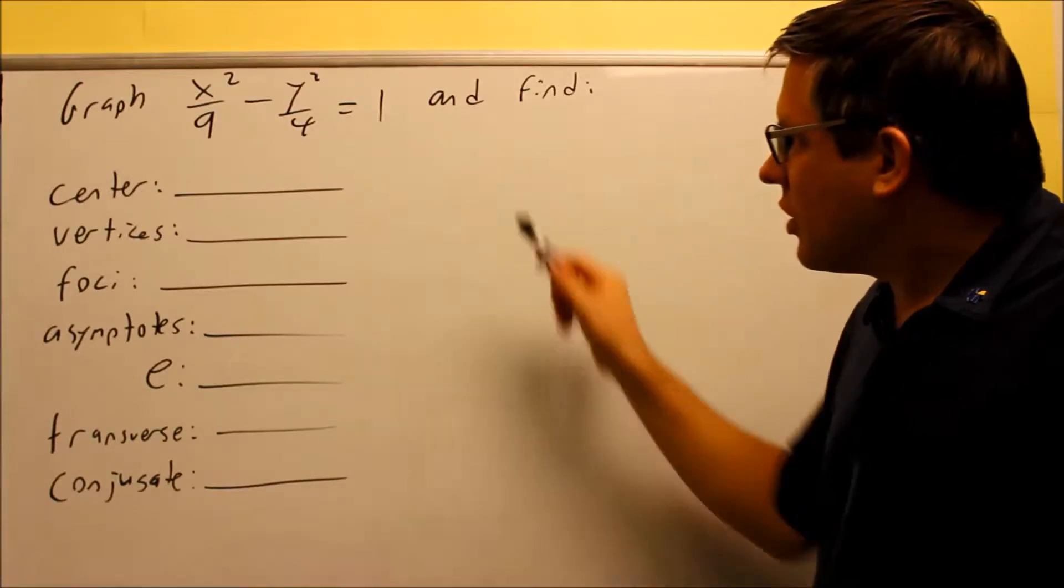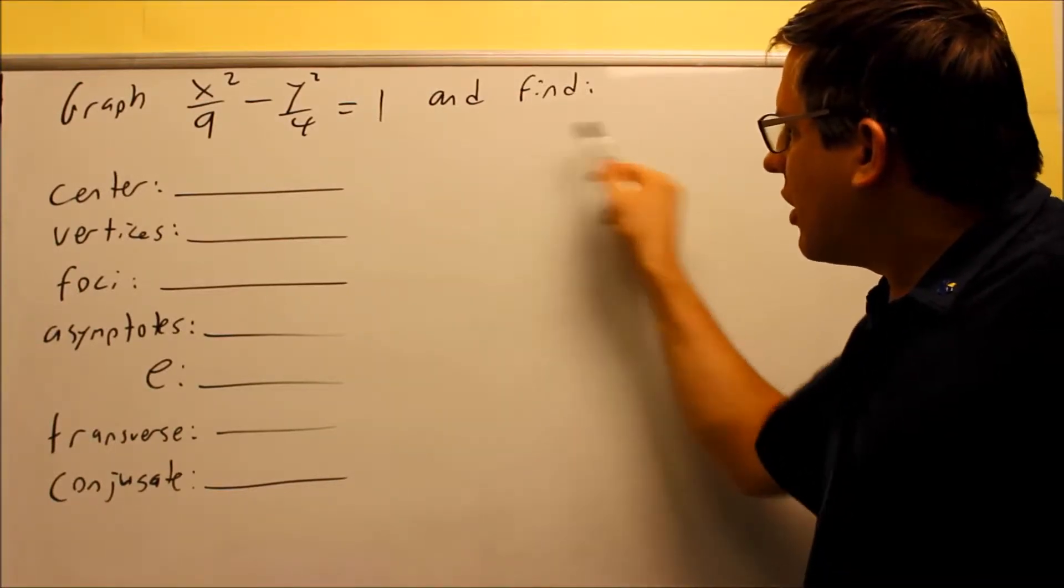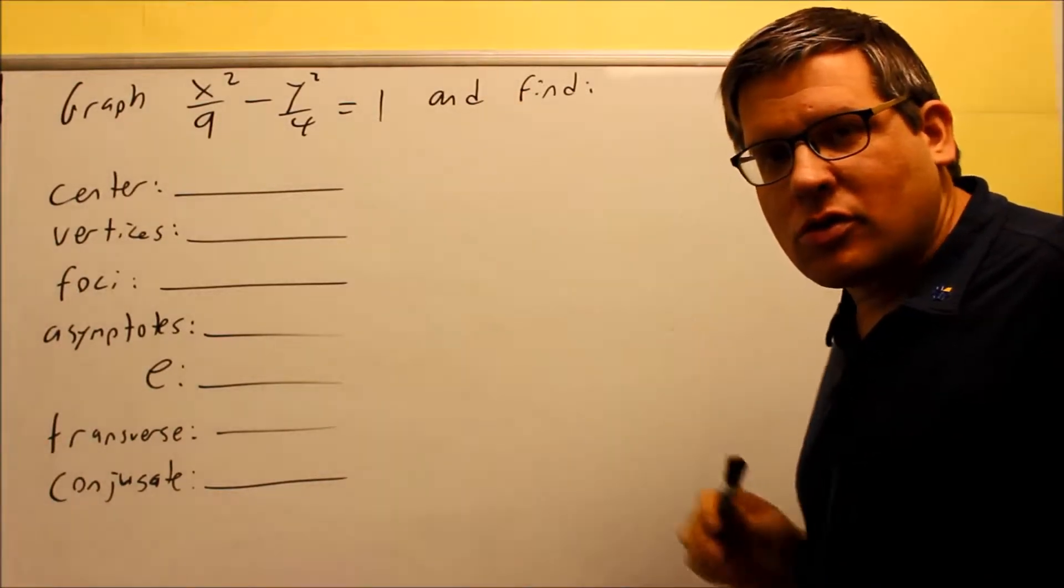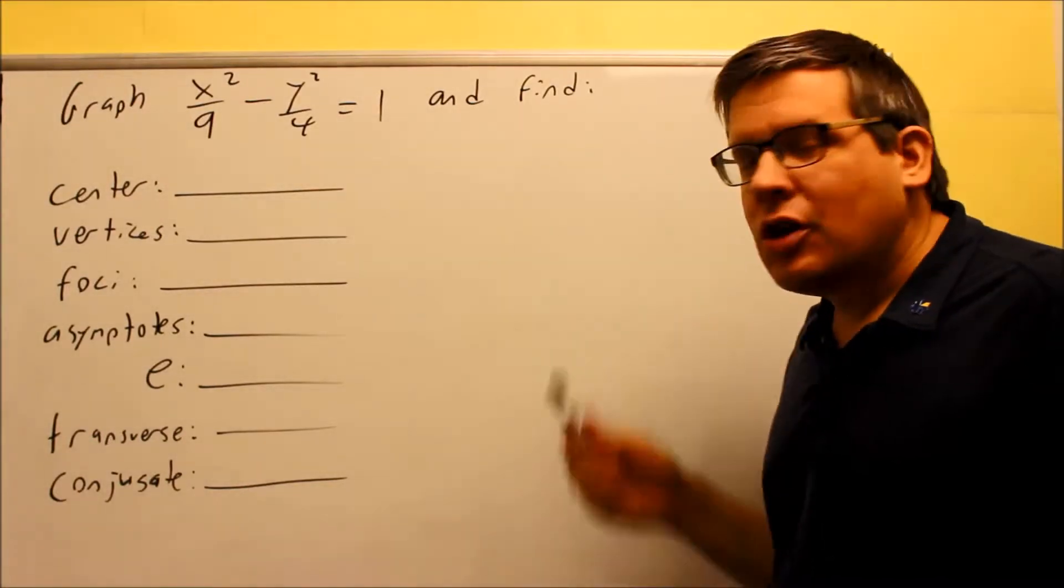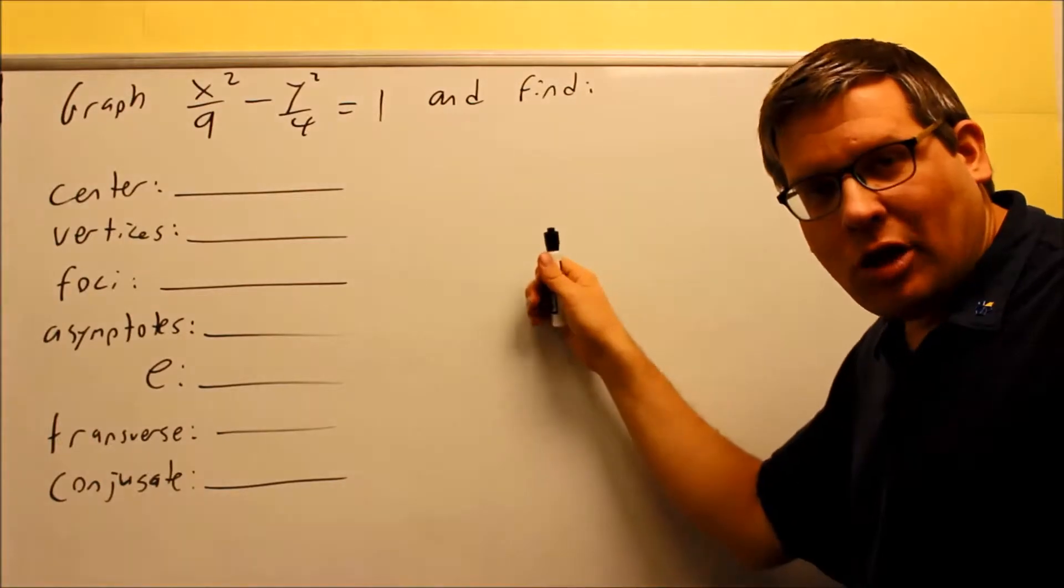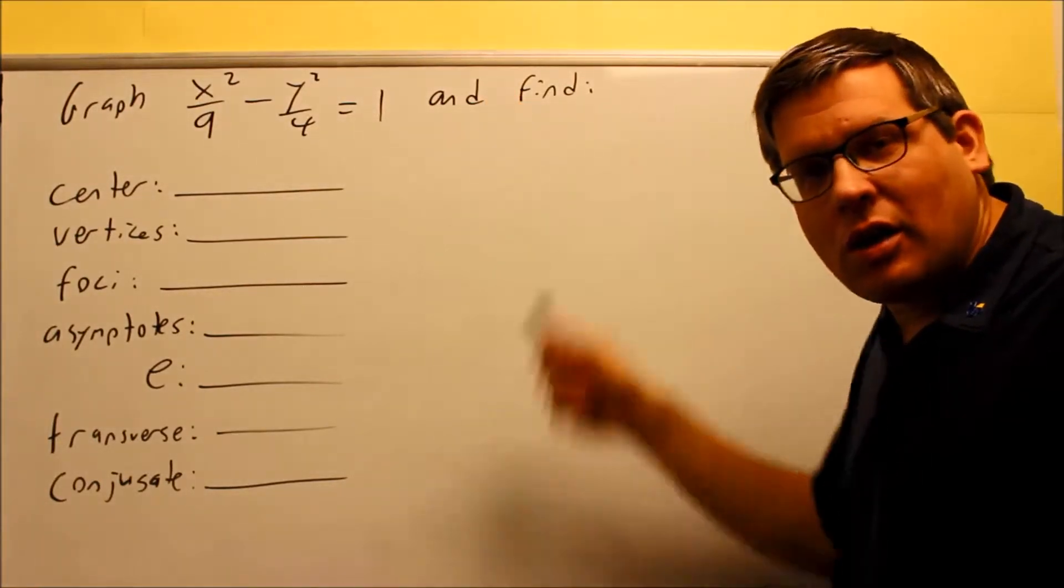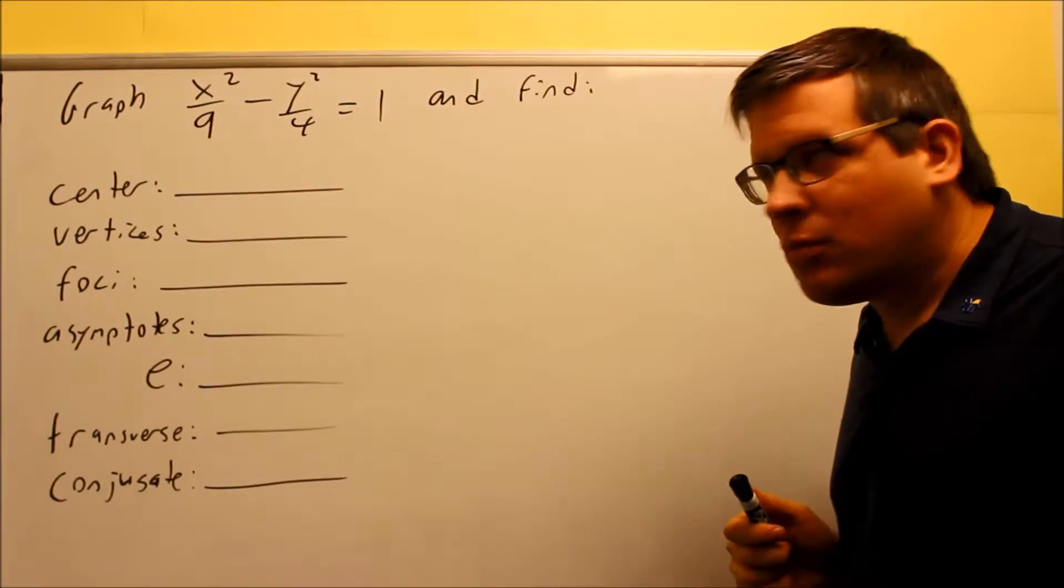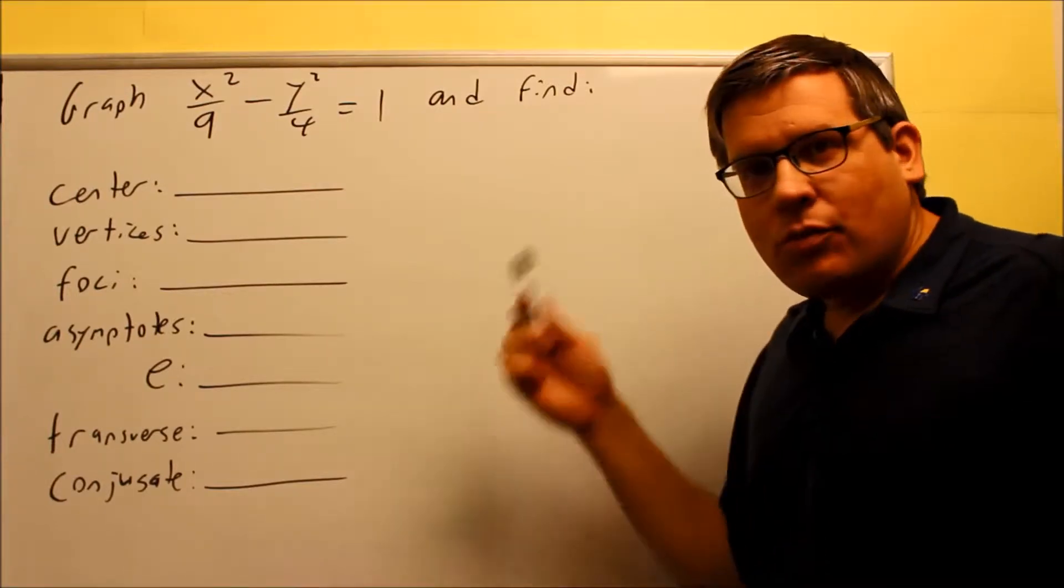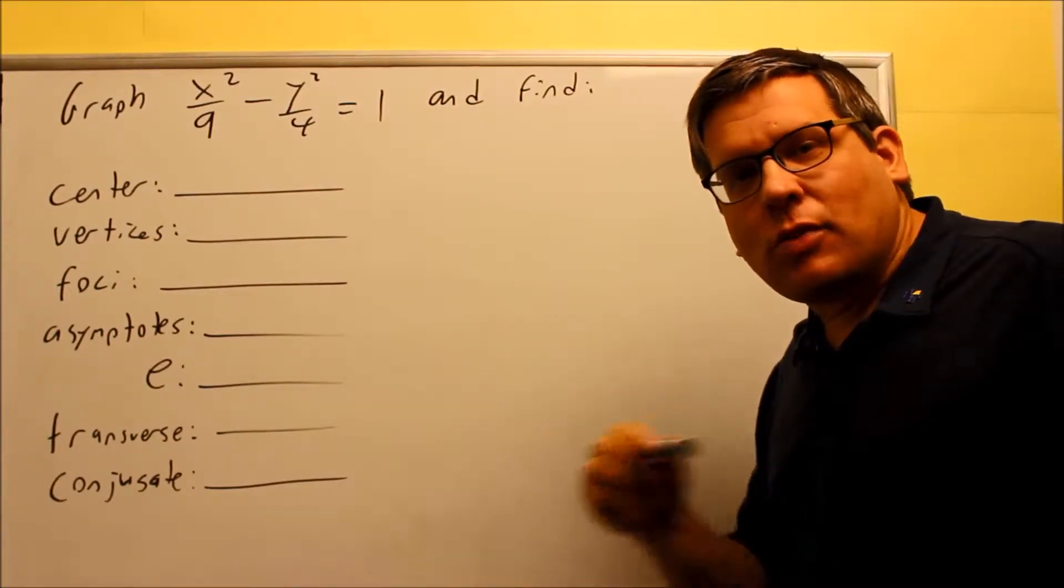Hyperbolas again are a shape that looks like this where you have two parabolas opening up in opposite directions. In real life, if you put a lamp up against a wall you'll see a hyperbolic pattern that occurs there. That's what the general shape is.